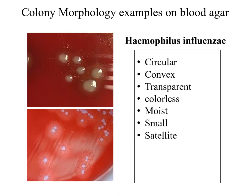This is Haemophilus influenzae. The colony is circular and convex, transparent or colorless, moist, and small. It is characterized by having small pinpoint colonies surrounding it, which we call satellites.